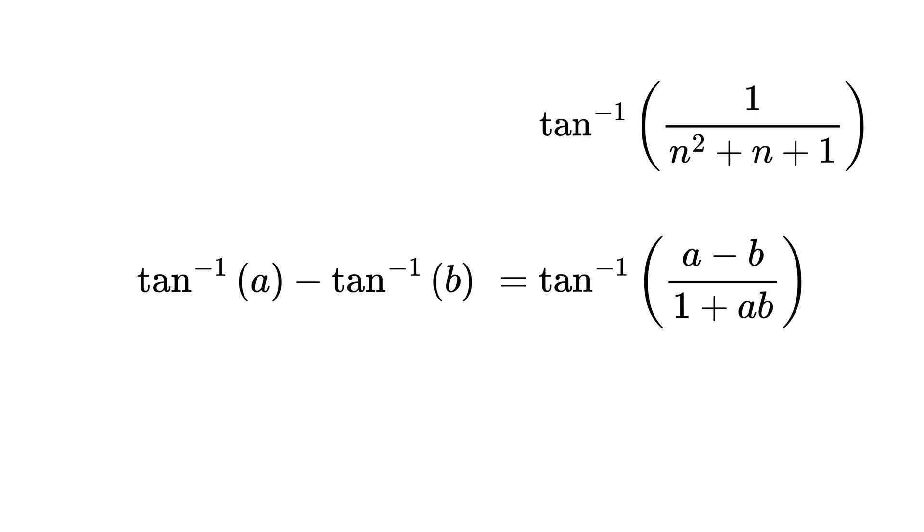Now we compare this result with the given fraction and try to match it carefully. Here comes the trick part. See that both these denominators have one in it, and thus somehow we need to make ab as n squared plus n. Take n as common and we get this as n plus 1 times n. I think we are getting somewhere.